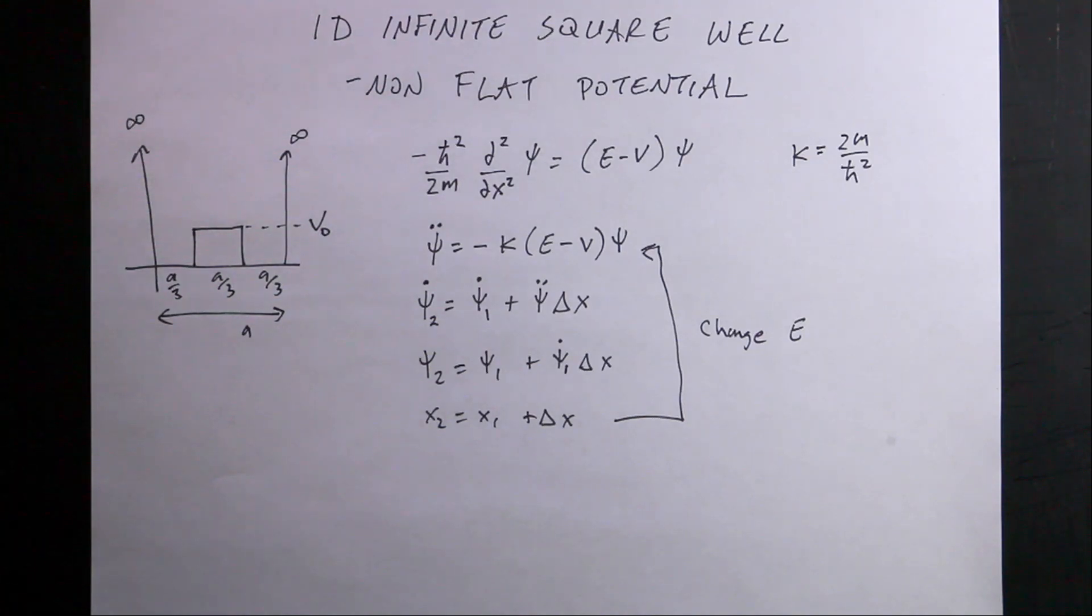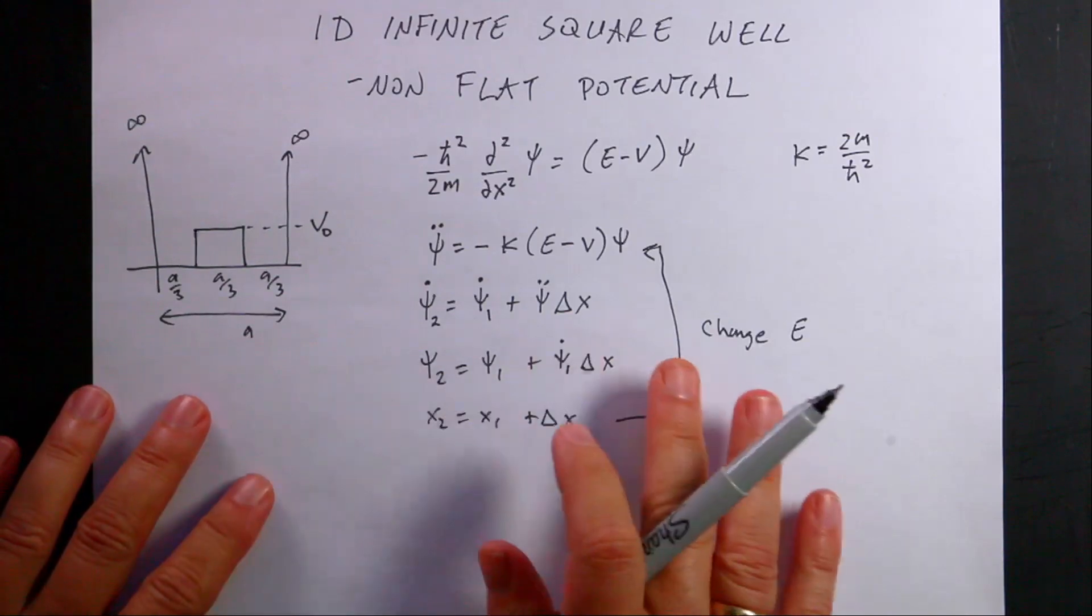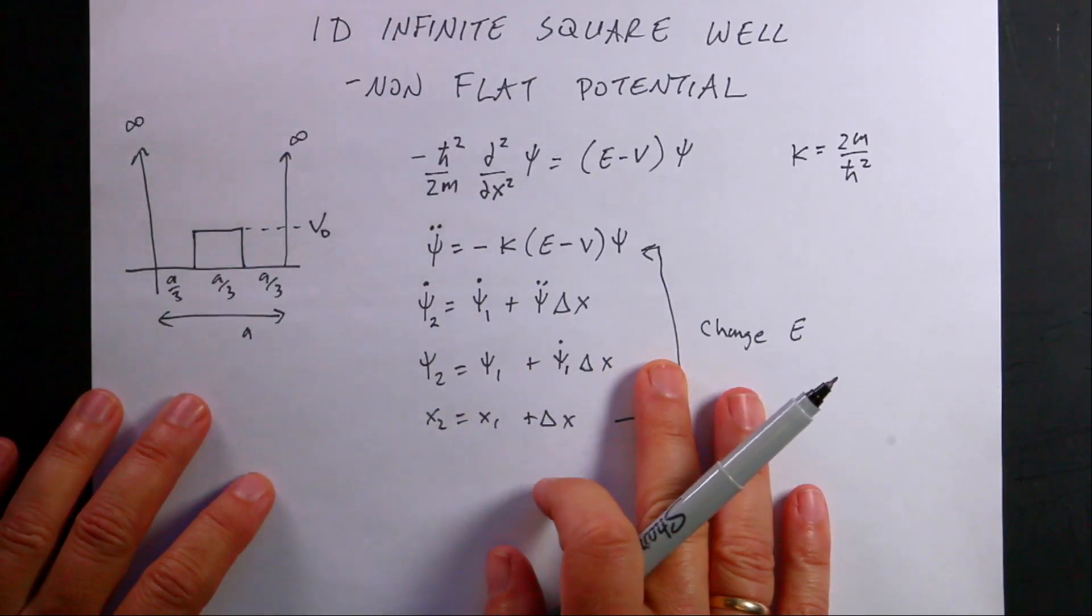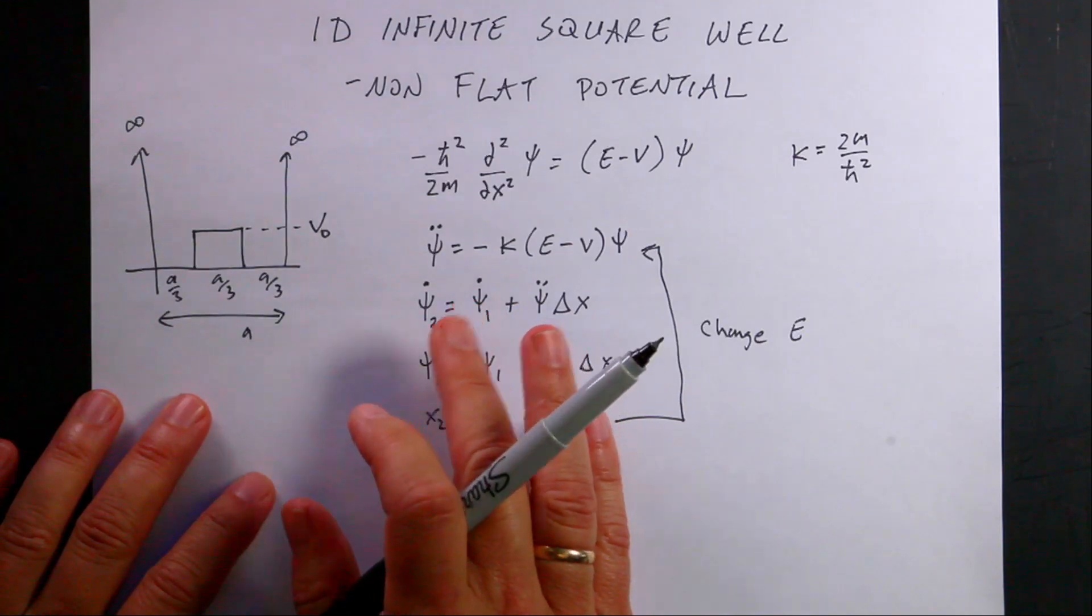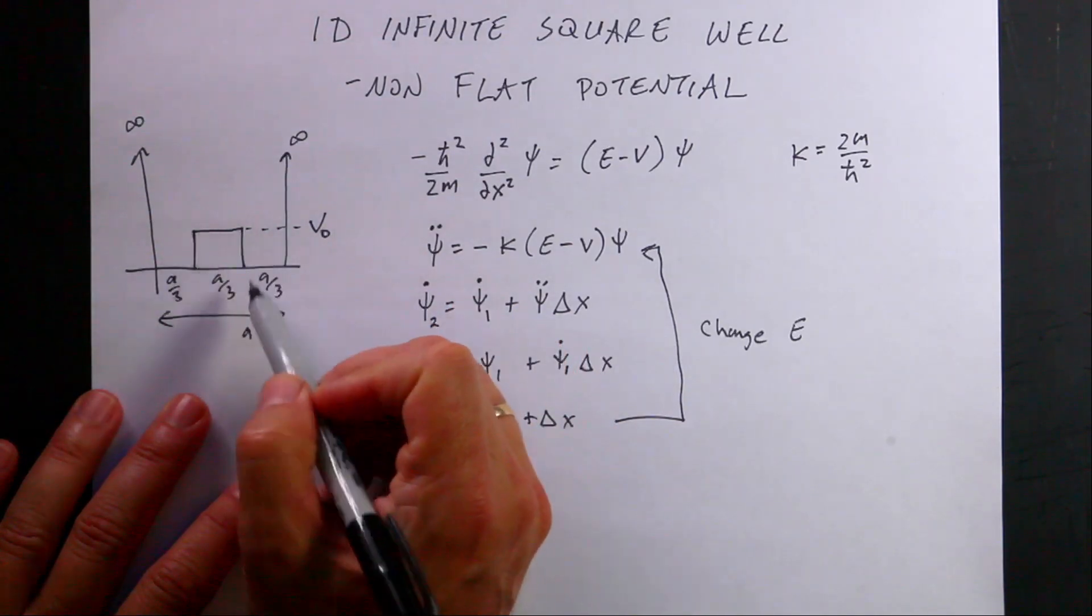I did a video with the infinite square well and I'm going to show you the code for that. And now I want to modify that and find the energy levels for an infinite square well with a bump in the middle.